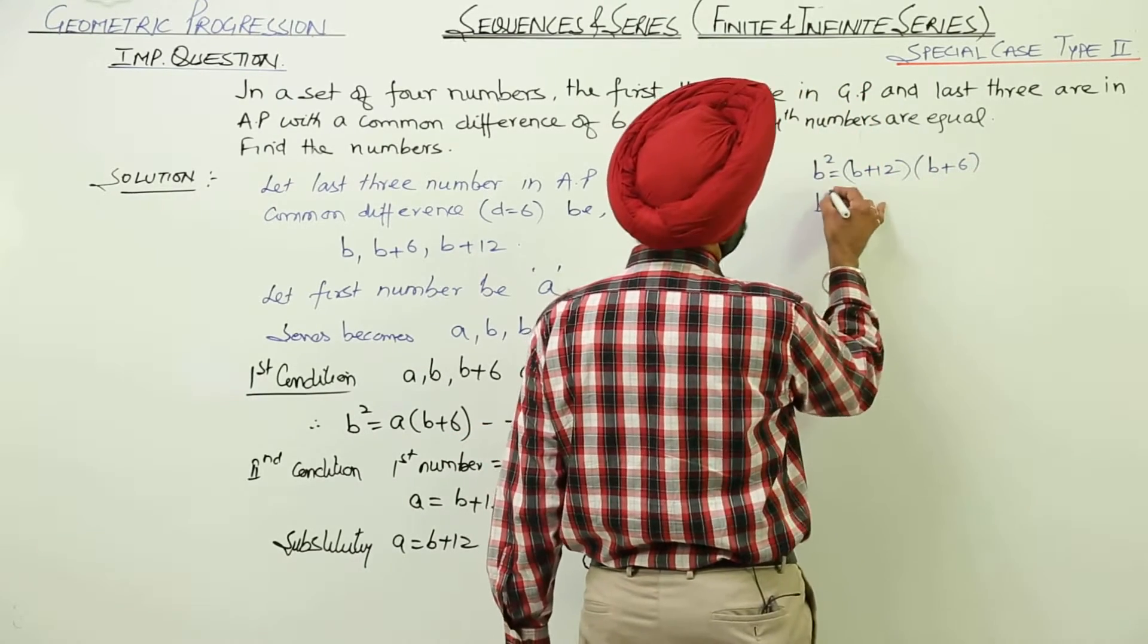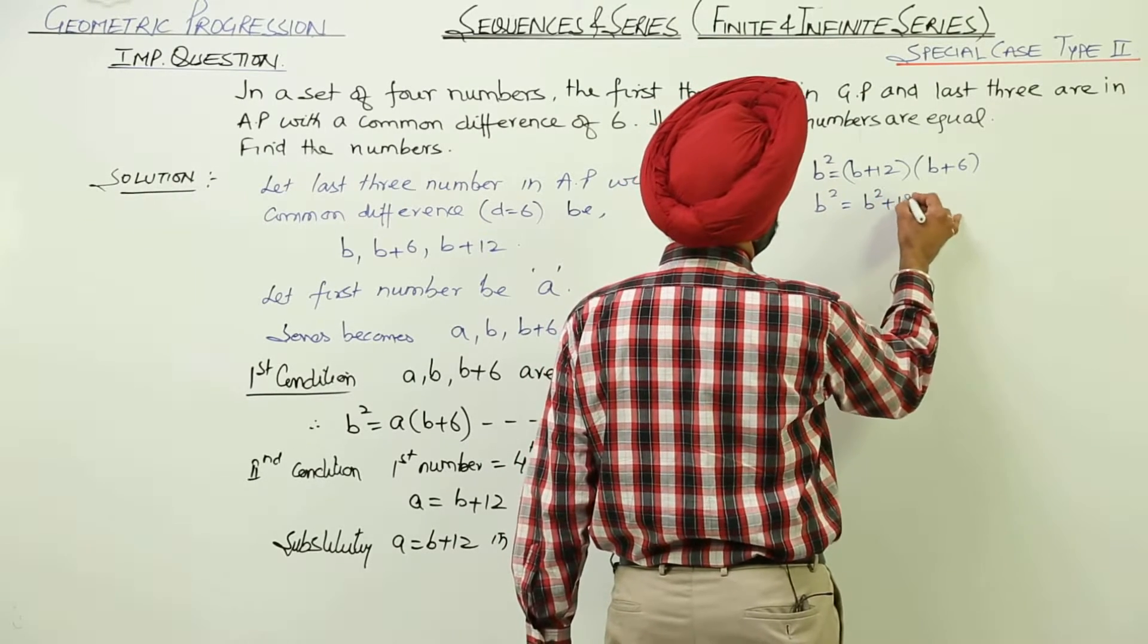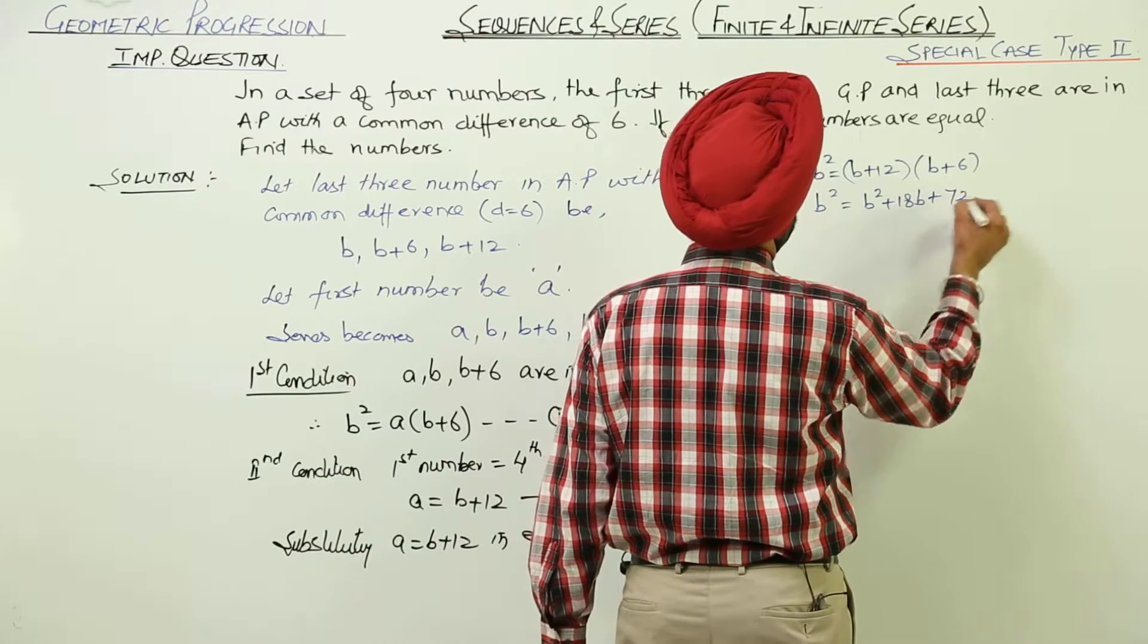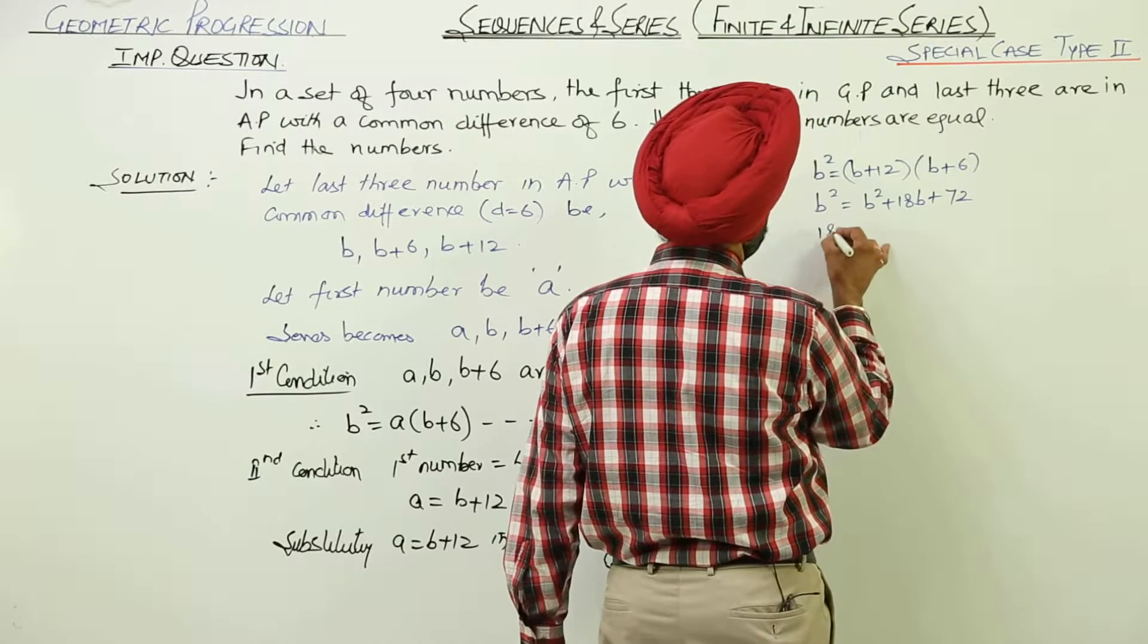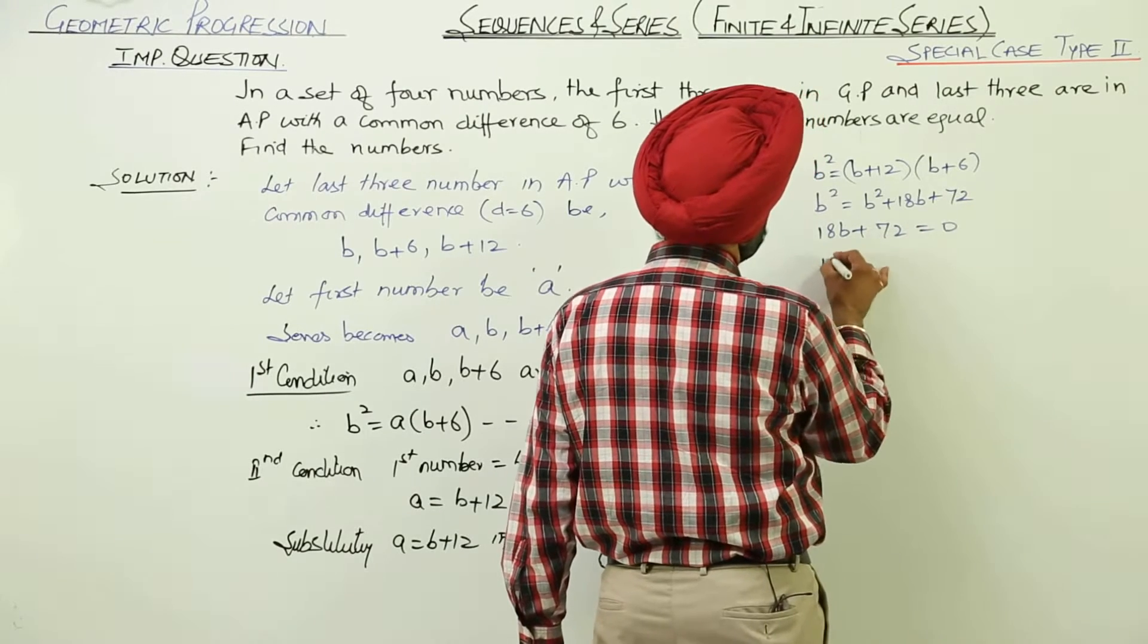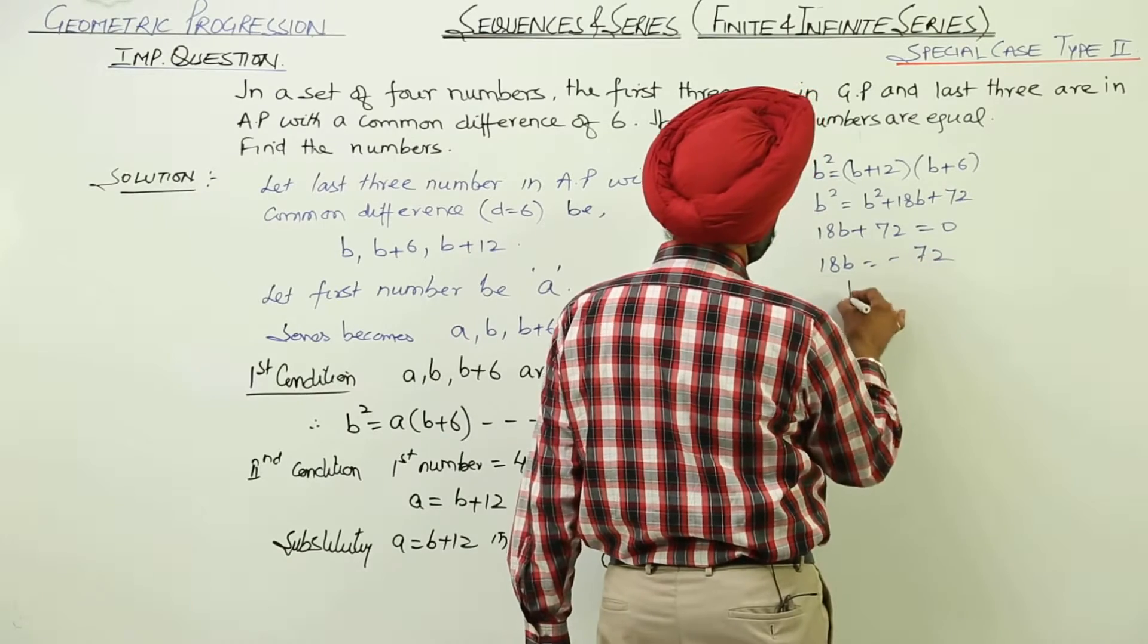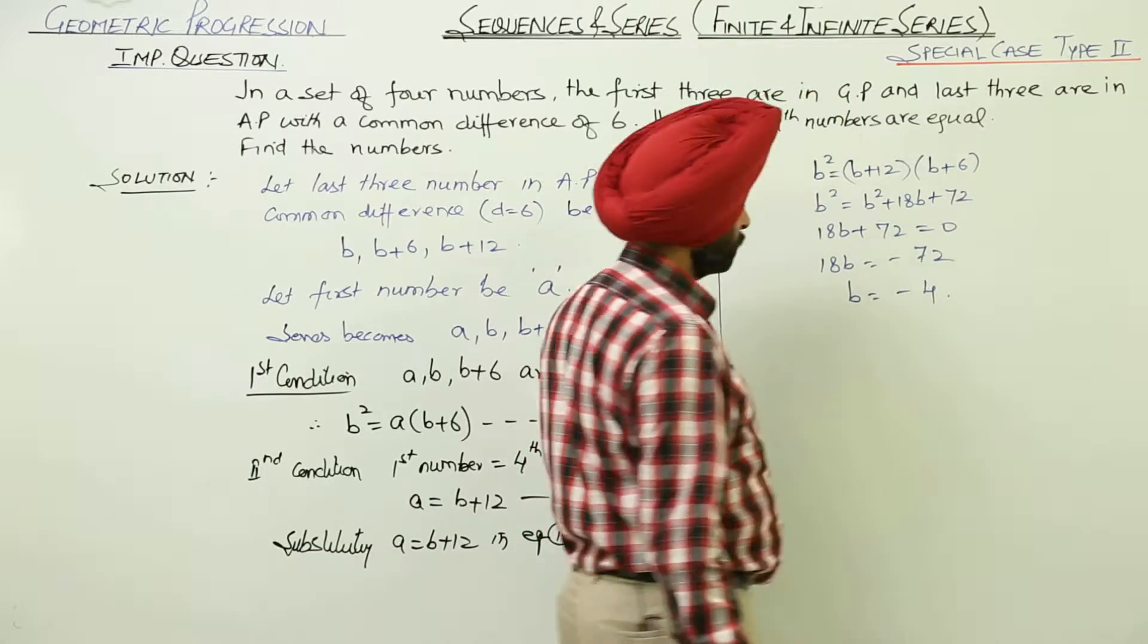Solving this part, it will be B square plus 18B plus 72. 18B plus 72 is equal to 0. 18B is equal to negative of 72 and B is equal to negative of 4.